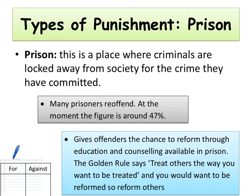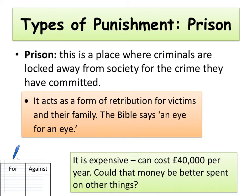Many prisoners re-offend — at the moment the figure is about 47%. This means that after coming out of prison, around 47% of people commit other crimes and need to be convicted and sent to prison again. Prison gives offenders the chance to reform through education and counselling available there. The golden rule says treat others the way that you want to be treated, and you would probably want to be reformed, as many criminals are through going to prison. Prison can also be seen as a form of retribution for victims and their families — the Bible says an eye for an eye, and taking people away from their loved ones and their freedom could be seen as just revenge.